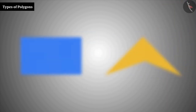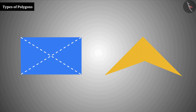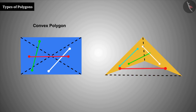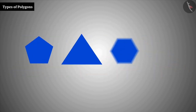So, polygons whose diagonals or line segments joining any two random points in the interior are completely confined within the interior are called convex polygons. Polygons whose diagonals, or some part of the diagonals or line segments joining any two interior points, are not completely confined to the interior are called concave polygons.